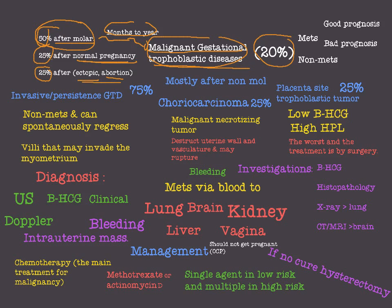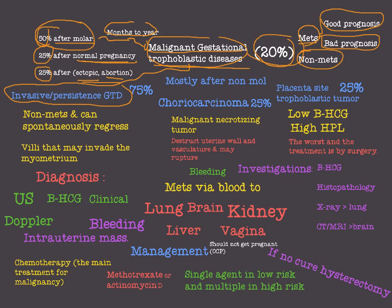Most malignant trophoblastic disease happens after a mole, and some after normal pregnancy or ectopic/abortion. They are subdivided into metastatic and non-metastatic malignant conditions, which matters for treatment and prognosis. The metastatic malignant gestational trophoblastic diseases are also subdivided into good prognosis and bad prognosis conditions. The types are: invasive or persistent GTD, choriocarcinoma, and placental site trophoblastic tumor.